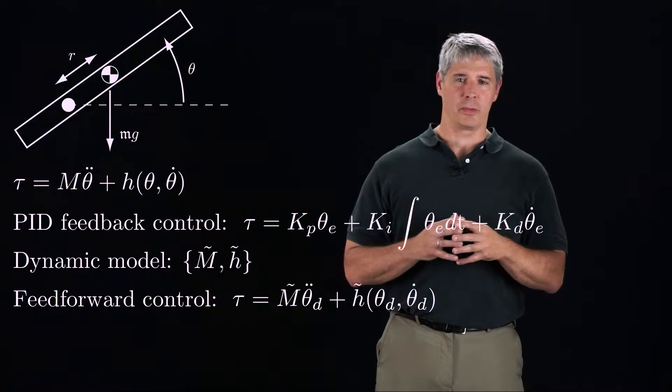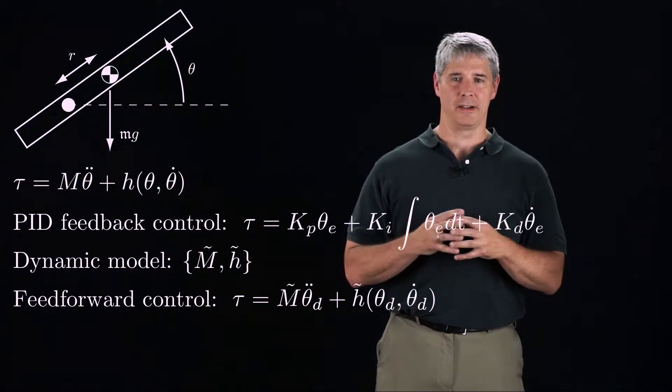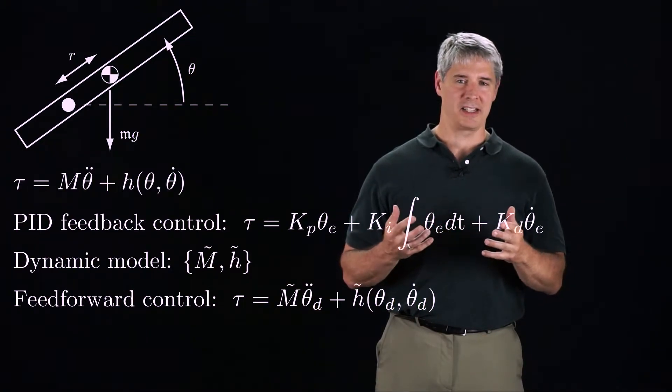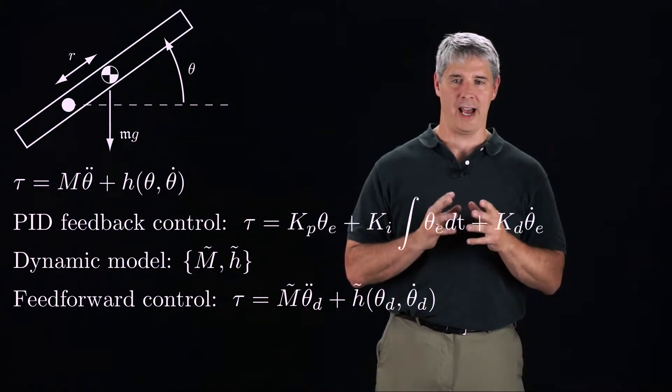At each time instant, we apply the torque M tilde times theta d double dot plus H tilde of theta d theta d dot. The desired position, velocity, and acceleration at any time instant comes from the known desired trajectory at that time instant.